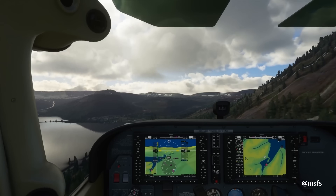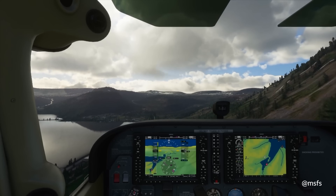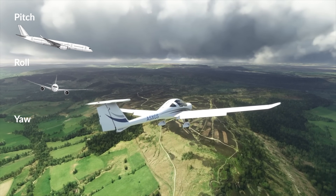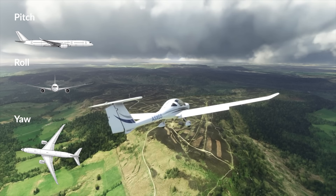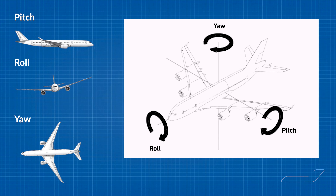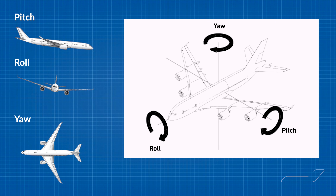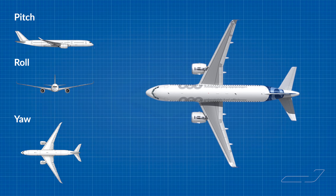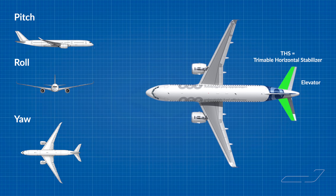Unlike cars, airplanes move through three-dimensional space and that is why they need to be controlled in all three axes. These three axes are called pitch — tilting the nose up and down — bank — rolling the wings — and yaw — moving the nose left and right. So the flight control surfaces on any airplane move the plane along these three axes. And here's how it works on the Airbus A320. In the pitch axis, the left and right elevators at the tail move the plane's nose up or down. The trimmable horizontal stabilizer, or THS, in front of the elevator trims the aircraft by adjusting the neutral position in the pitch axis.